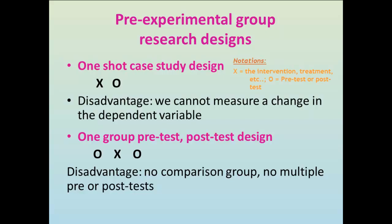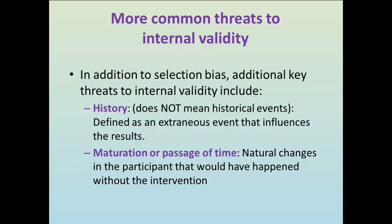Pre-experimental group research designs have the lowest level of internal validity, largely because these designs do not include a comparison group. However, these designs are commonly used in social work research because they can be more easily implemented in social work settings. In the one-shot case study design, a single group of participants receives an intervention and then a post-test — the main problem being that we don't know if there has been a change in the dependent variable since it is measured only once. An improvement is the one-group pre-test/post-test design, because there is a pre-test so changes can be detected. But since there is no comparison group, it is still difficult to be sure the intervention caused the change.